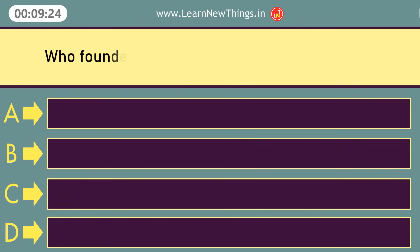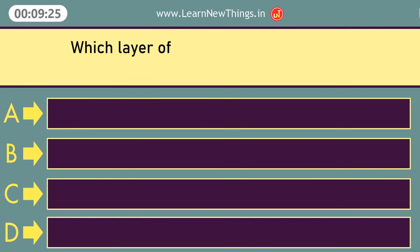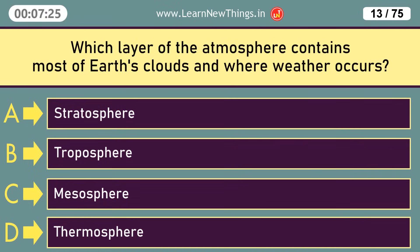Who founded the Greenbelt Movement in 1977? Wangari Maathai. Which layer of the atmosphere contains most of Earth's clouds and where weather occurs? Troposphere.